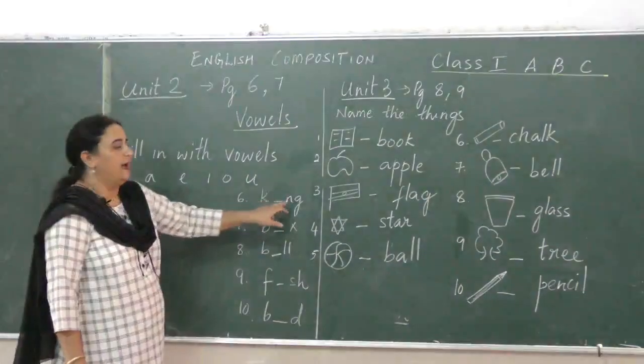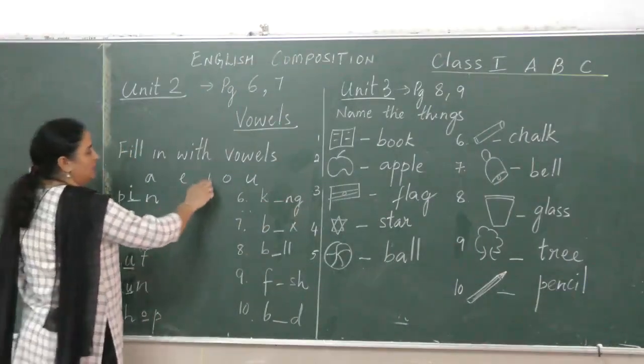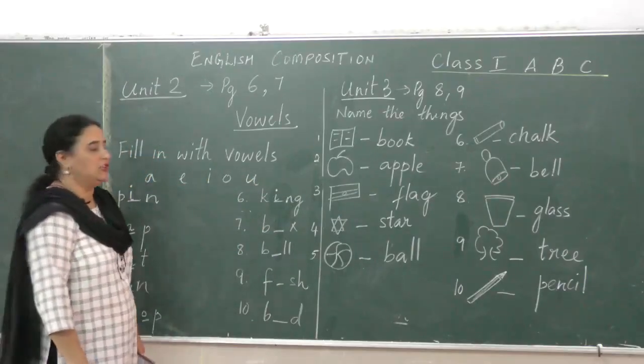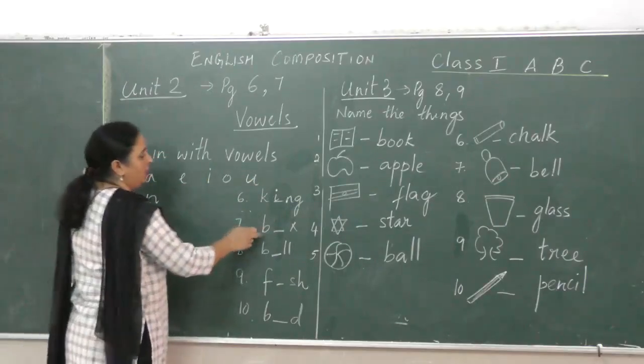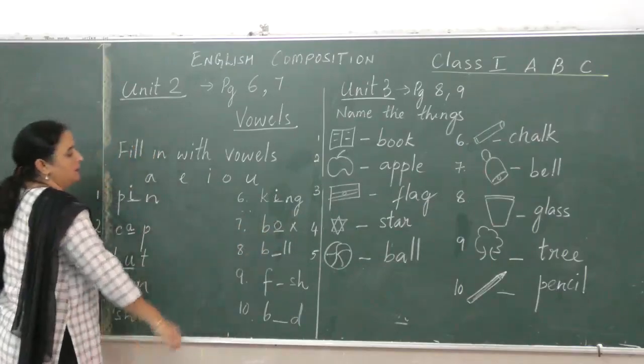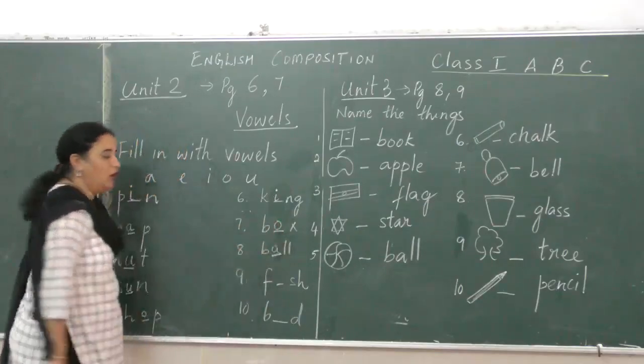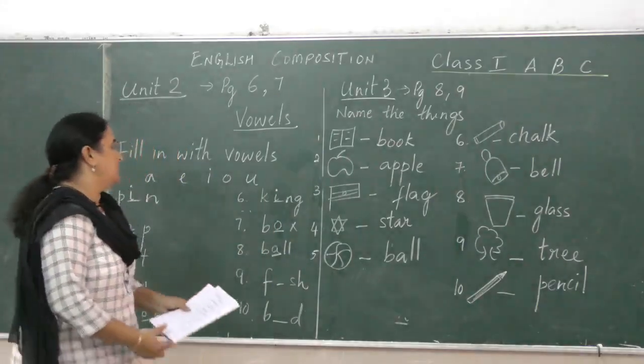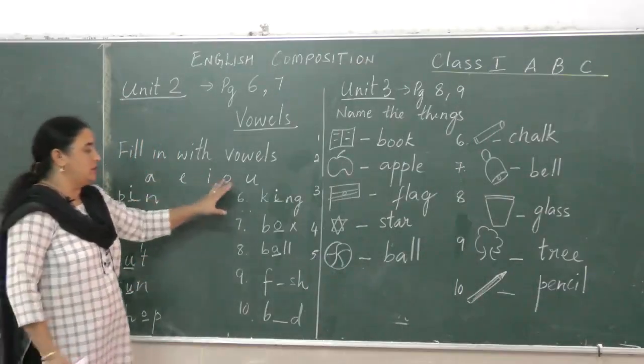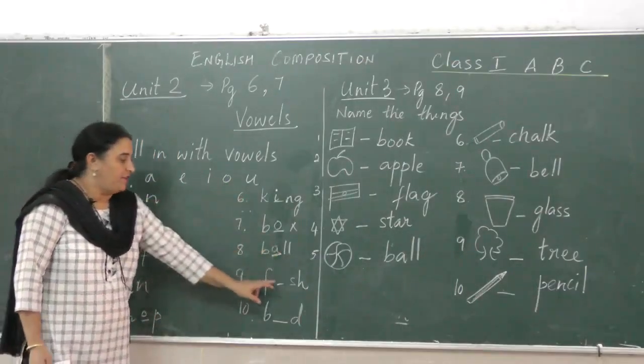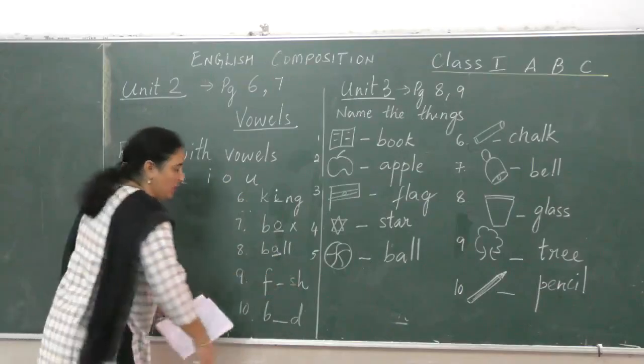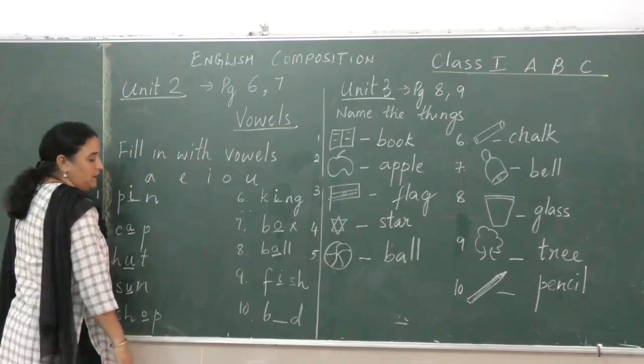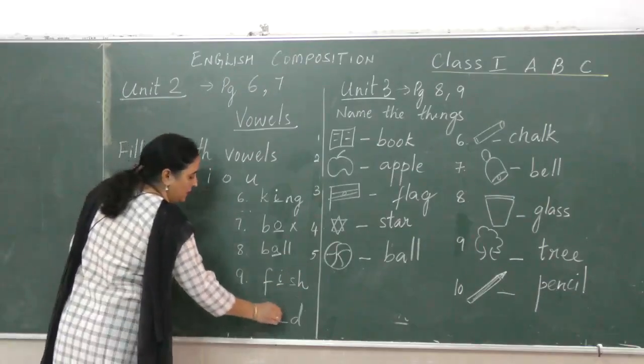Then K-NG. So I will take the alphabet I, that makes it K-I-N-G, king. B-O-X, box. B-A-L-L, ball. B-E-L-L also is the right word, bell. So that is the appropriate, that is the correct vowel that you will use here to make words. F-I-S-H, fish. And the last one is B-E-D, that makes it bed.